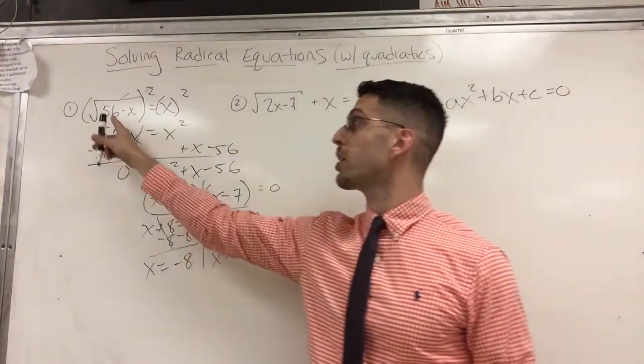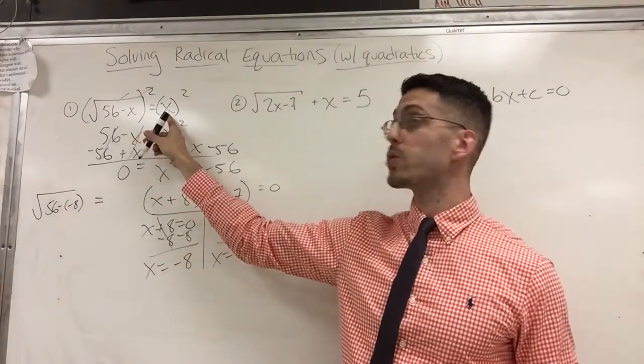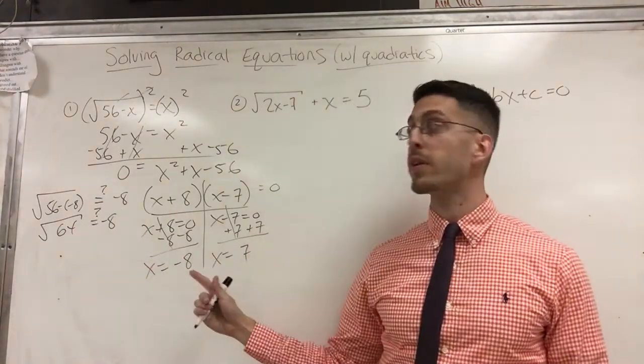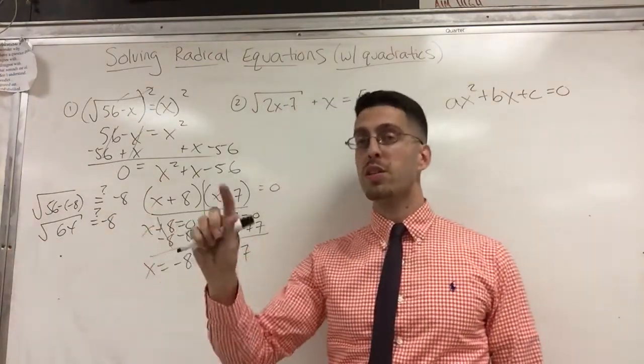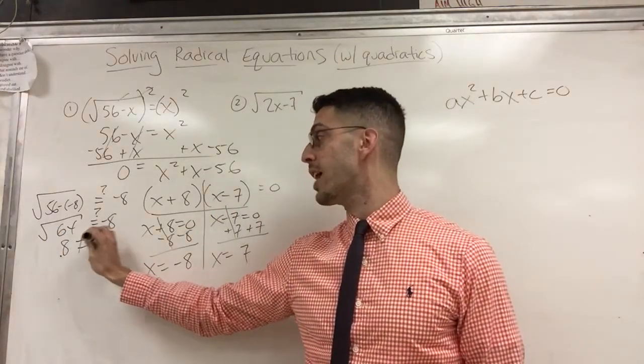So let's see, I'm going to go with negative 8 first. So I'm going to plug in negative 8 here. So let's see, radical 56 minus negative 8, does that equal, the original equation was equals x, right? So does that equal negative 8? Question, I'm not sure yet. So let's see, radical 56 minus negative 8 is really 56 plus 8, which is 64. Does that equal negative 8? The square root of 64 is, I discussed this in another video, if you don't see a sign out there you can argue that it's positive or negative, but if you don't see the sign out there it's implied that it's just a positive. So the square root of 64 is 8, and that does not equal negative 8. Sorry, you get rejected. They call that an extraneous root. I'm going to just say reject.